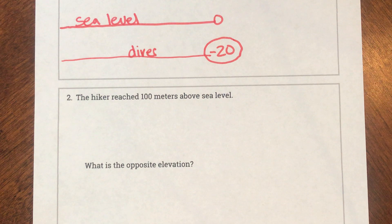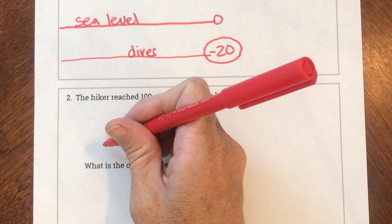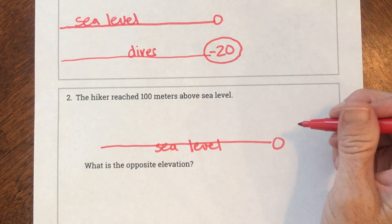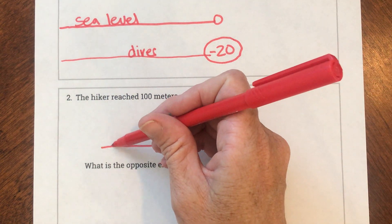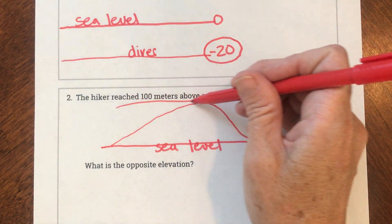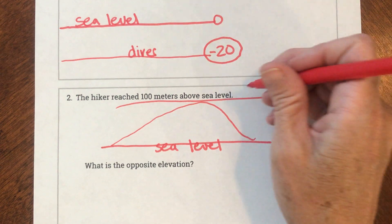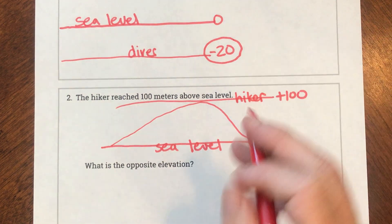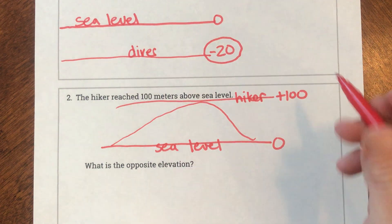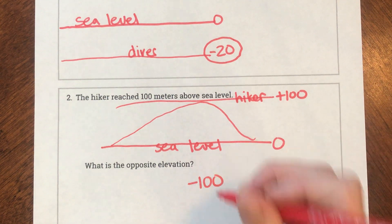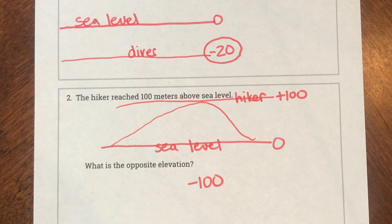The hiker reached 100 meters above sea level. Sea level is zero. If he was above sea level, that's like there's a mountain and here's the hiker at 100 above sea level, so here would be our hiker. They ask what's the opposite elevation — the opposite of positive 100 is negative 100. The opposite of positive 100 is negative 100.